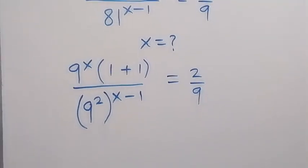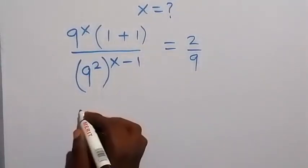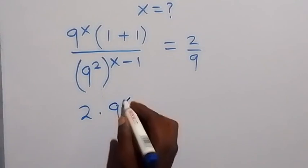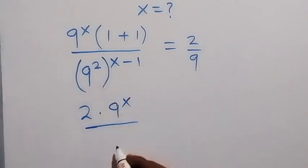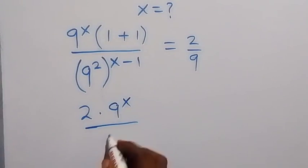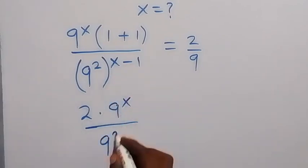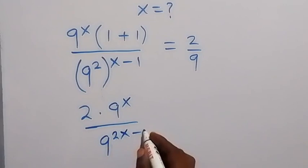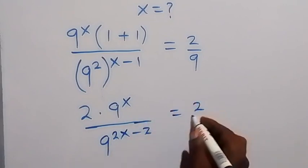From here we can add 1 plus 1, that's 2. We can write it as 2 times 9 raised to power x. Then in the denominator, we multiply the powers: x times 2 and minus 1 gives 9 raised to power 2x minus 2, which equals to 2 divided by 9.